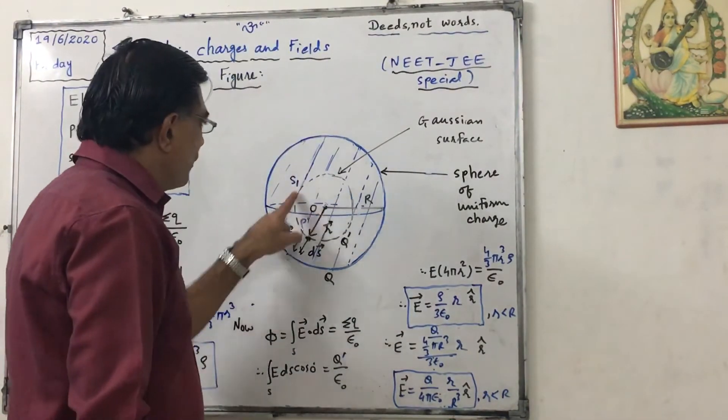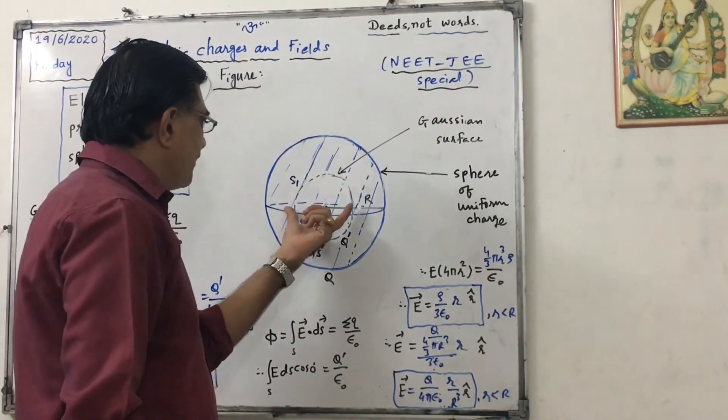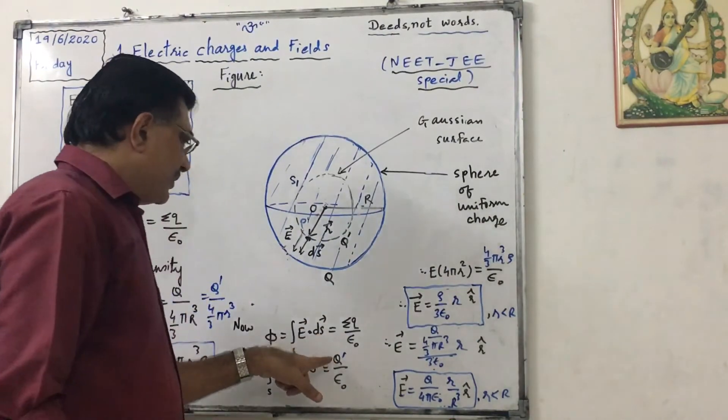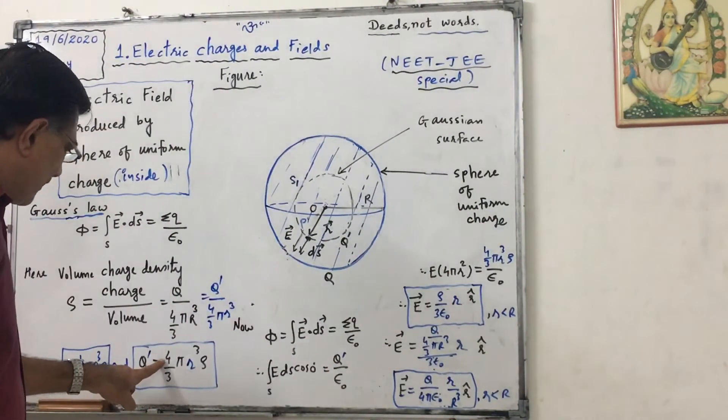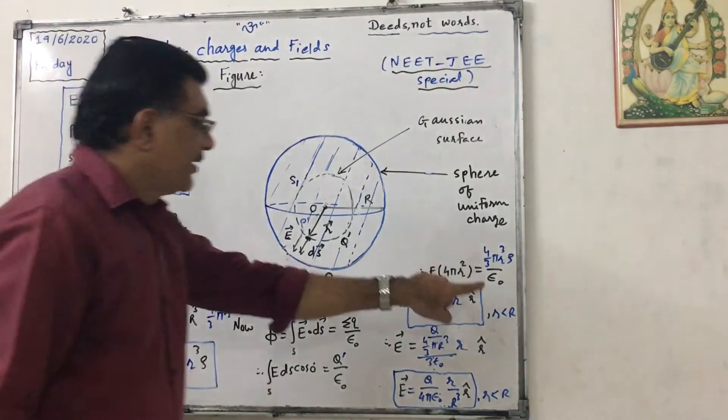So E into 4 pi r square, that is area of this Gaussian surface, equals to what is q dash? It is this: 4 upon 3 pi r cube rho upon epsilon naught.